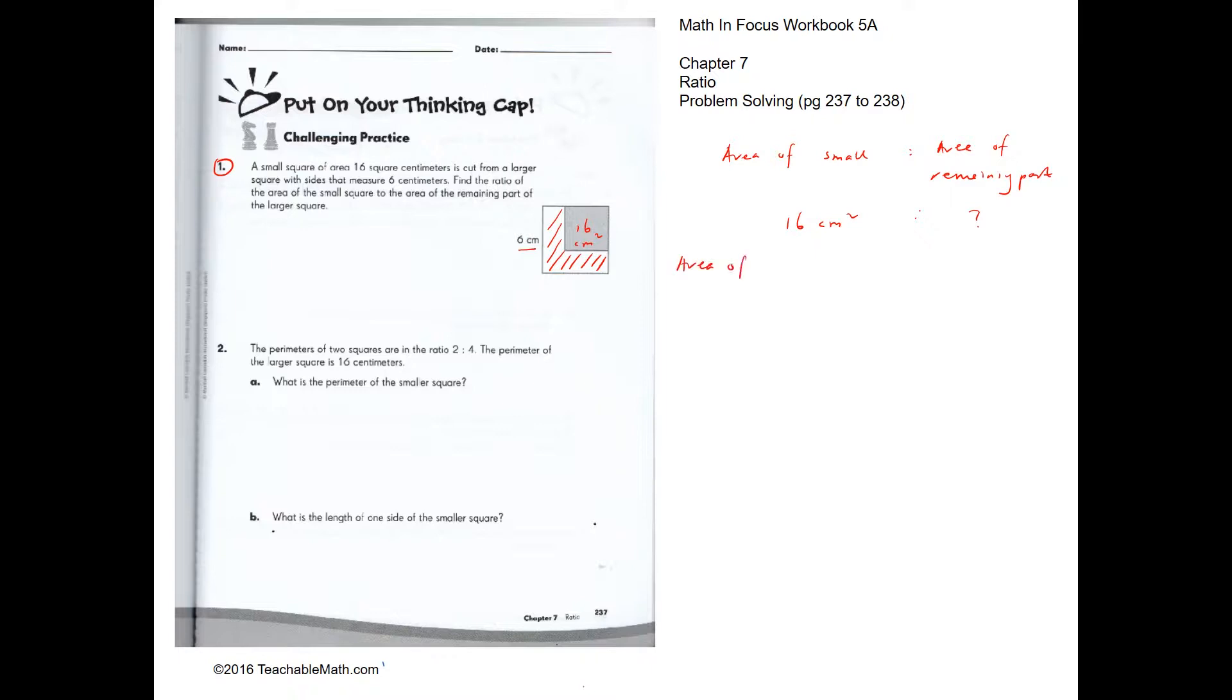The area of the remaining part will be equal to the area of the big square, which is 6 times 6, minus the area of the small square, which is 16. So this will be 36 minus 16, which is 20.